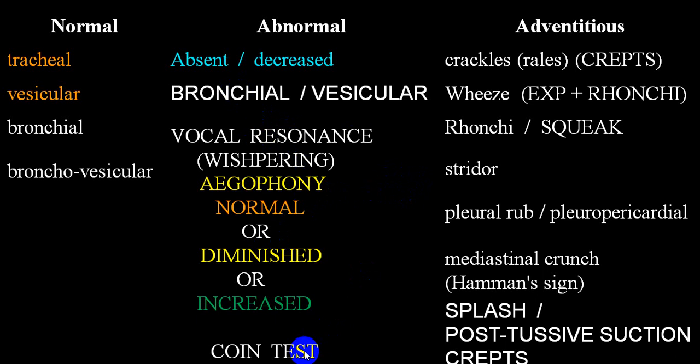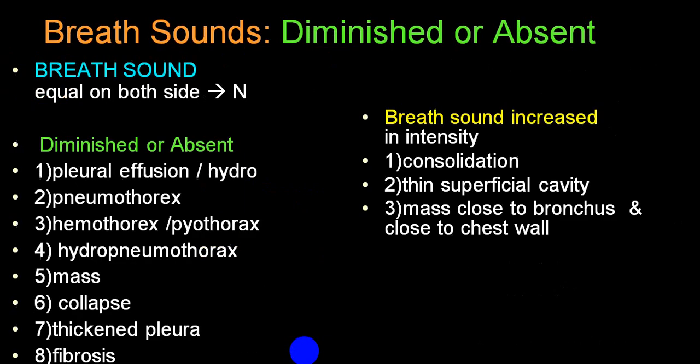One more technique: the coin test. Keep one coin on the chest and percuss with another coin; this produces a sound. In pneumothorax, if you percuss anteriorly and auscultate posteriorly, you get a classical loud metallic sound — this is called the coin test positive. This is also possible in hydropneumothorax, particularly in the sitting posture.